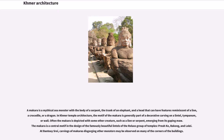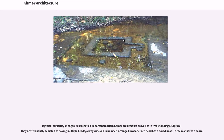A makara is a mythical sea monster with the body of a serpent, the trunk of an elephant, and a head that can have features reminiscent of a lion, a crocodile, or a dragon. In Khmer temple architecture, the motif of the makara is generally part of a decorative carving on a lintel, tympanum, or wall. Often the makara is depicted with some other creature, such as a lion or serpent, emerging from its gaping maw. The makara is a central motif in the design of the famously beautiful lintels of the Roluos group of temples — Preah Ko, Bakong, and Lolei. At Banteay Srei, carvings of makaras disgorging other monsters may be observed on many of the corners of the buildings.